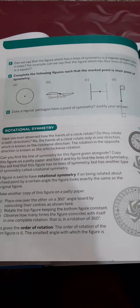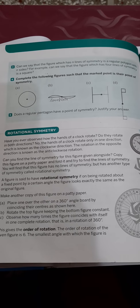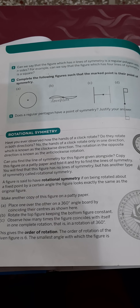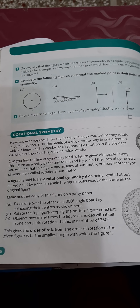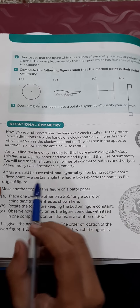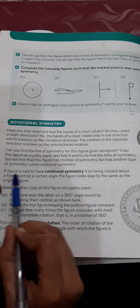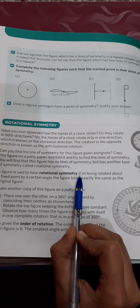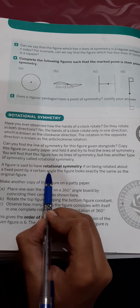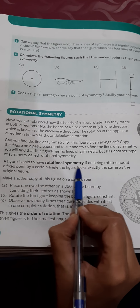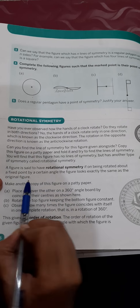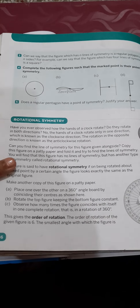Hello everyone, today we are going to start with the new topic which is rotational symmetry of exercise 14.2. A figure is said to have rotational symmetry if, on being rotated about a fixed point by a certain angle, the figure looks exactly the same as the original figure. Now I am going to explain this definition with the help of one example.